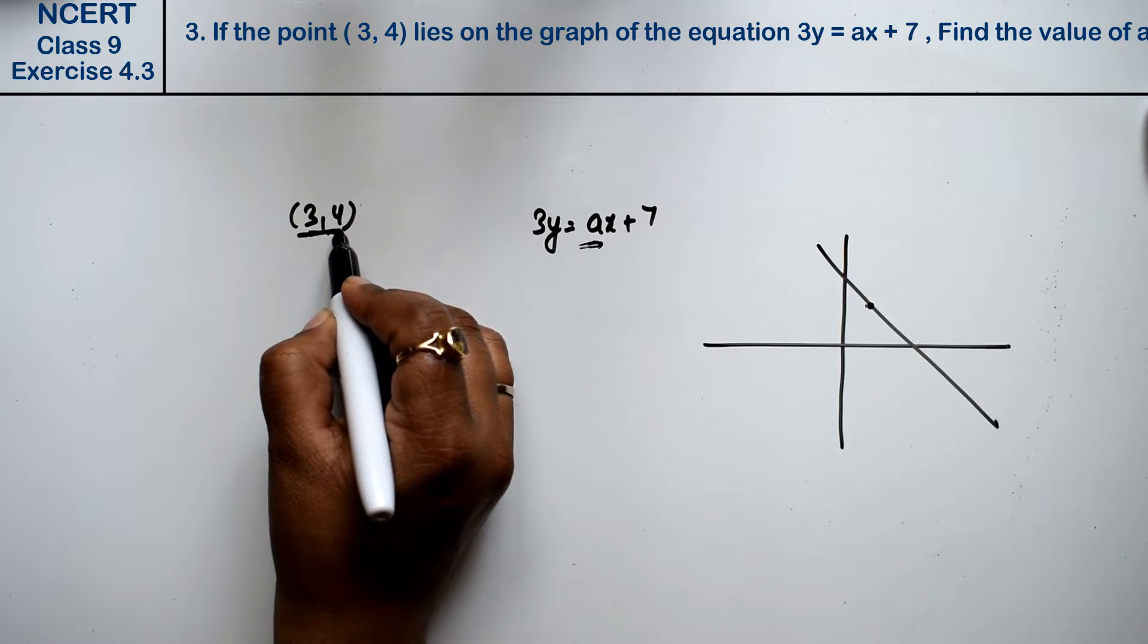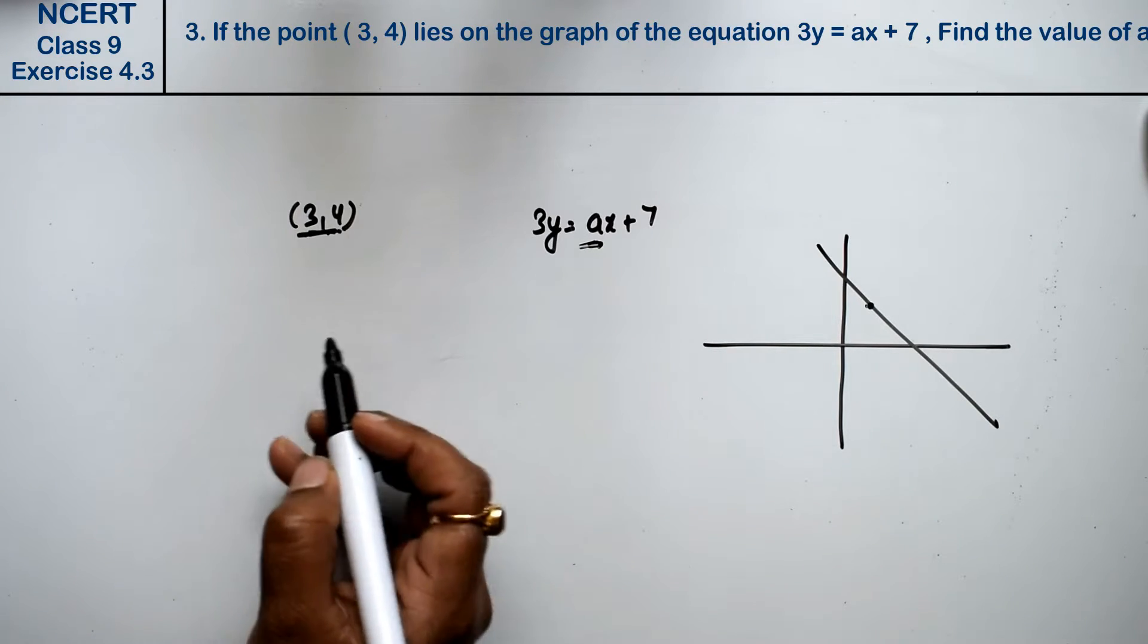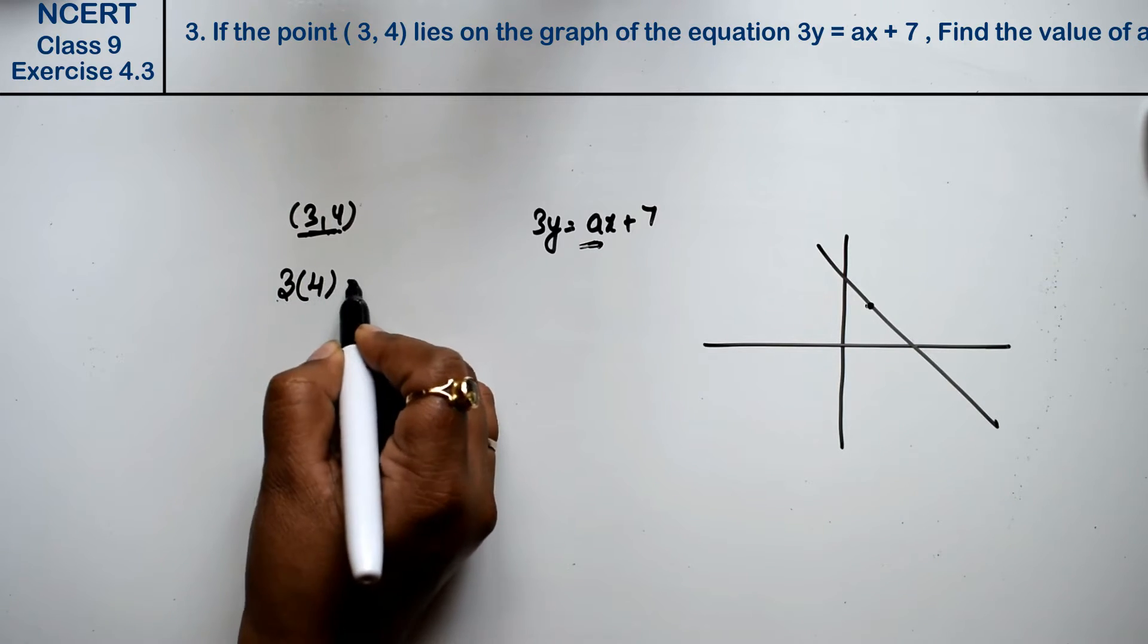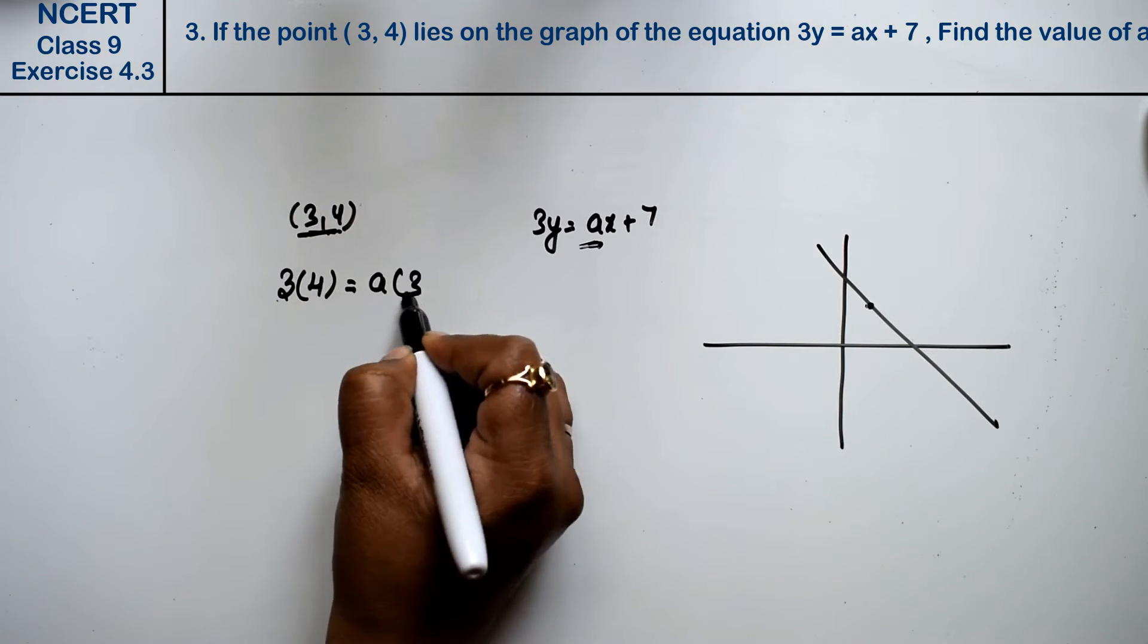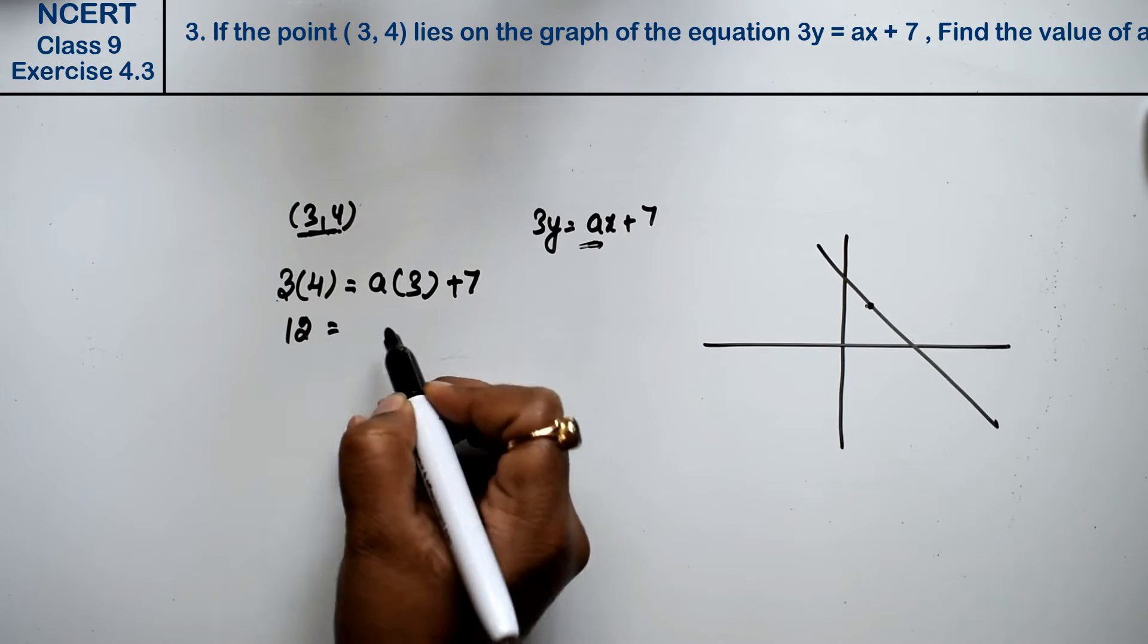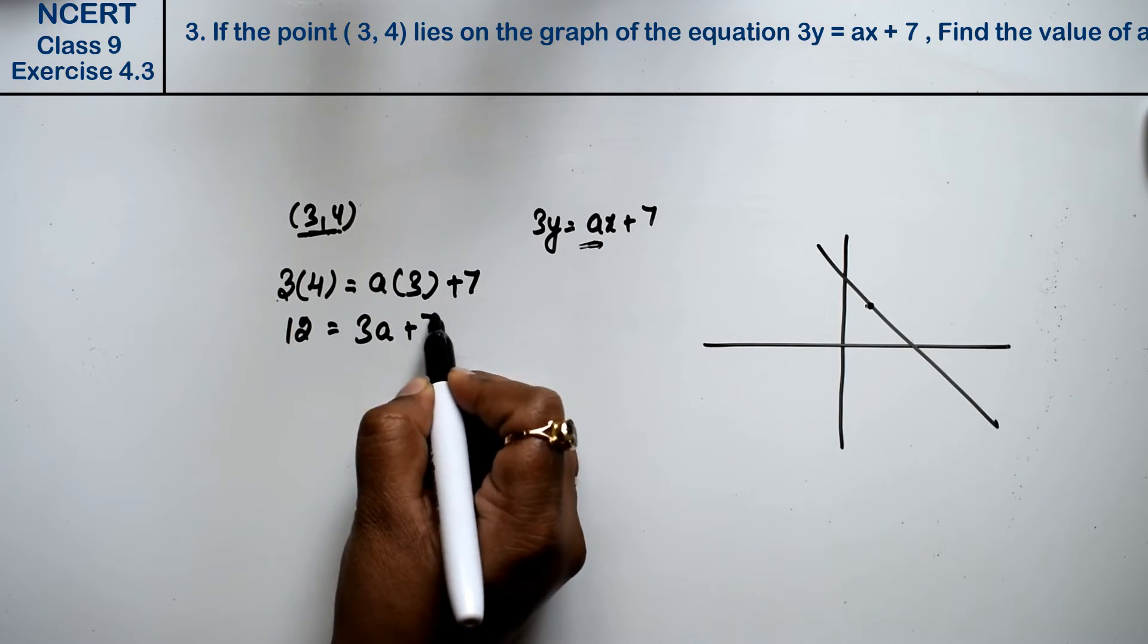We know that the first value is x and the other value is y. So we will keep the value in this equation. y value 4 equals to a into x value 3 plus 7. So how much is it? 12 equals to 3a plus 7.